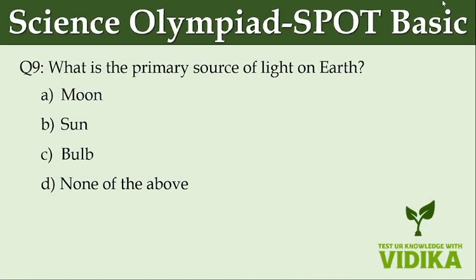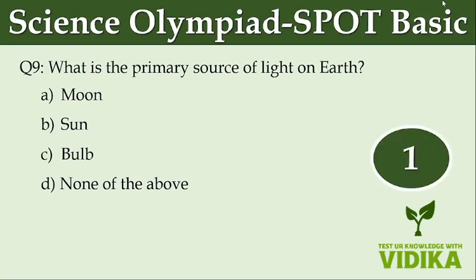What is the primary source of light on earth? Option A, moon. Option B, sun. Option C, bulb. Option D, none of the above.